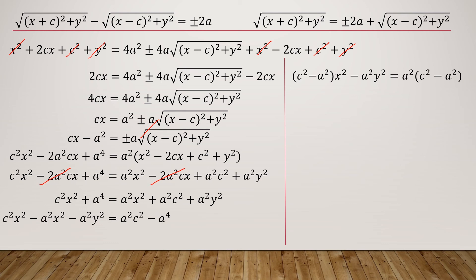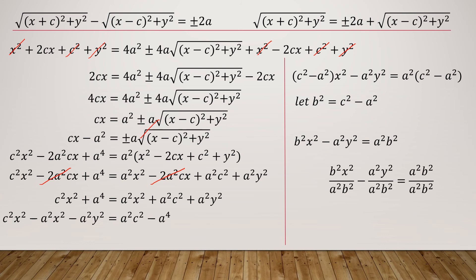Just as in the derivation of the ellipse equation, we set another variable: let b² = c² - a². Substituting, we get b²x² - a²y² = a²b². Dividing both sides by a²b², we obtain x²/a² - y²/b² = 1. This division is valid because in the triangle F'PF, 2c is one side and the difference of the other two sides is 2a, so c > a and therefore c² - a² > 0.